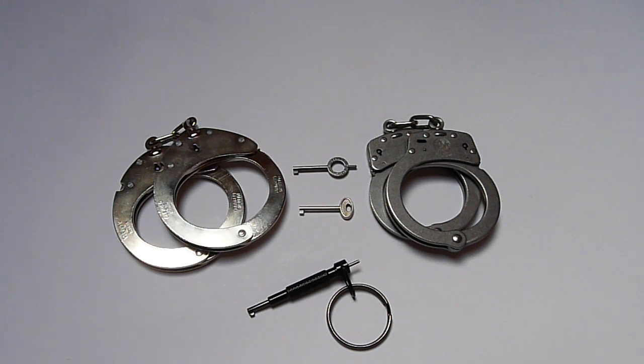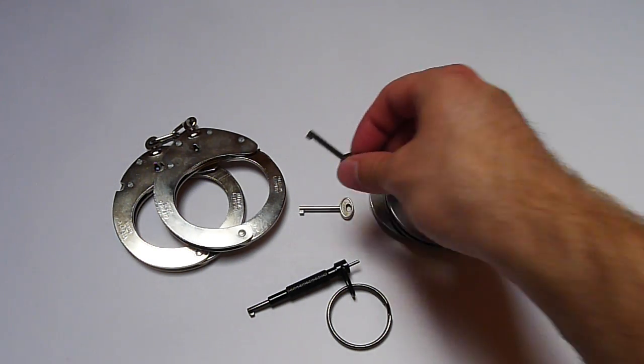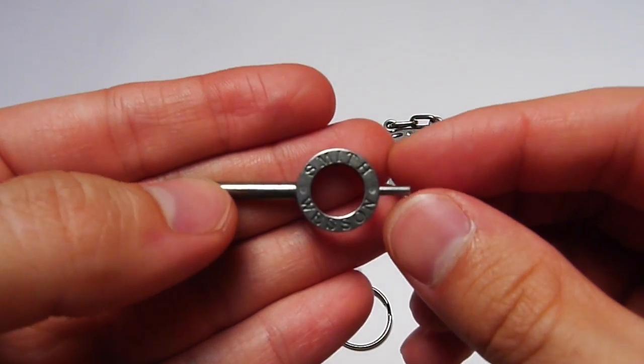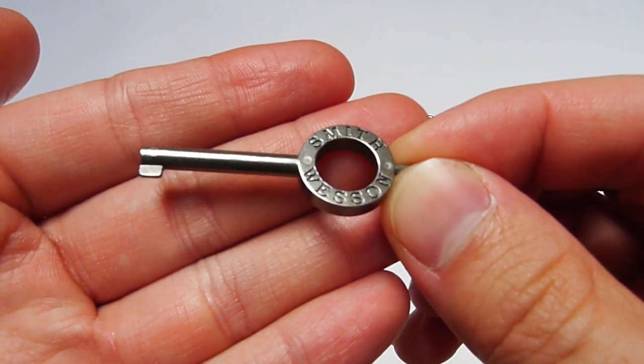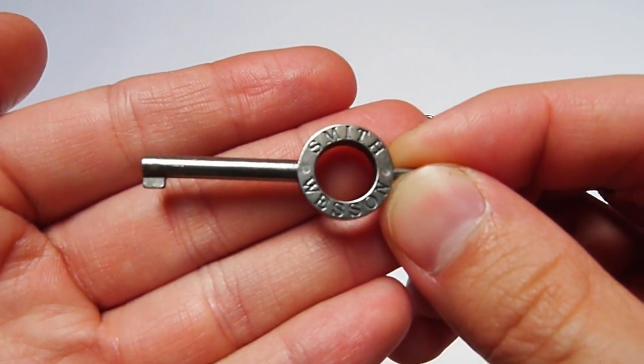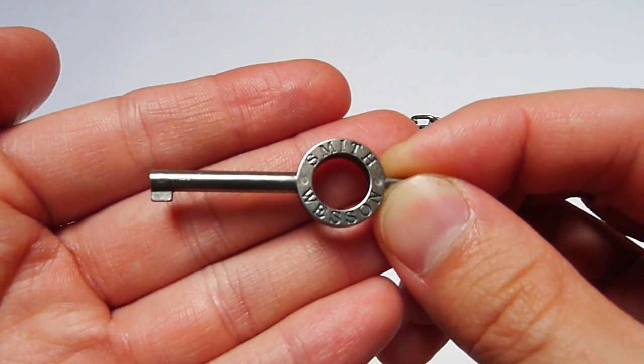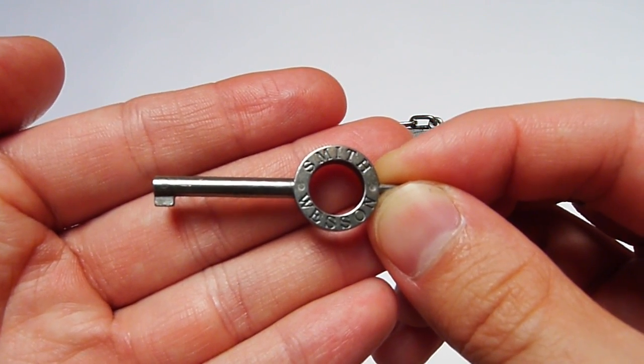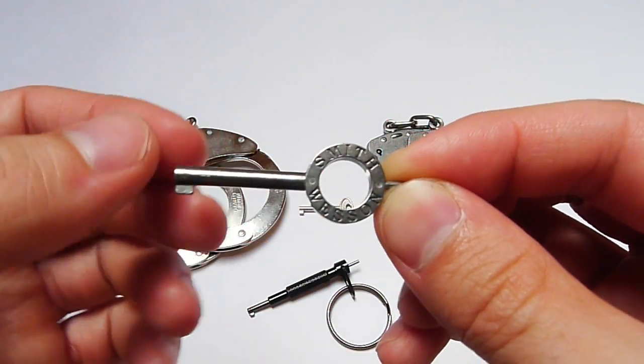For example, the guys from the Tool Organization have already talked about the perfect universal handcuff key. They came up with an idea with measurements and everything, and I think they've also patented it. I also remember that they've told us you could cut your own universal handcuff key out of the Smith & Wesson handcuff key because it nearly matches all the requirements.